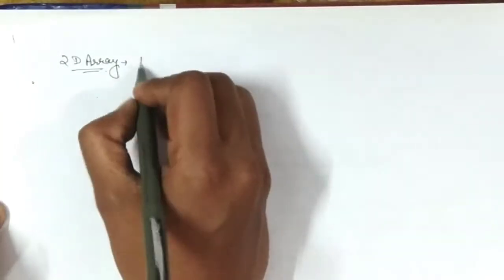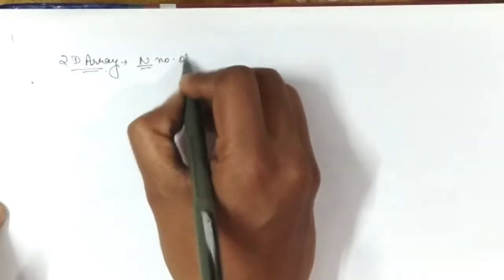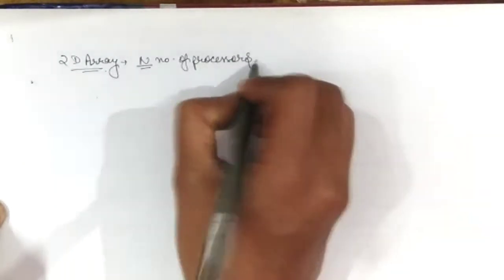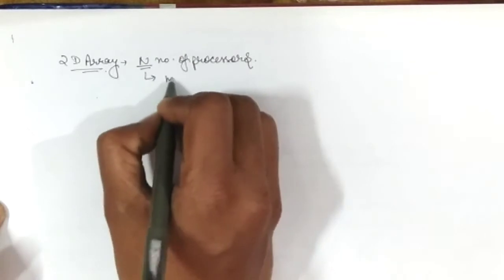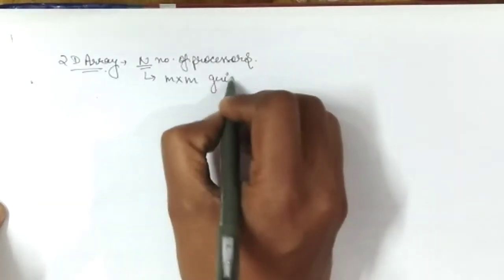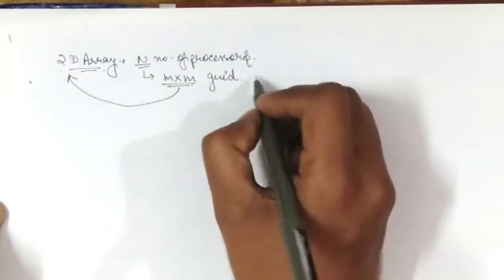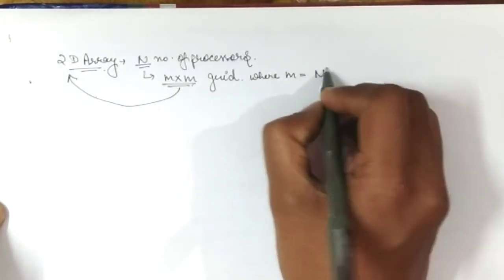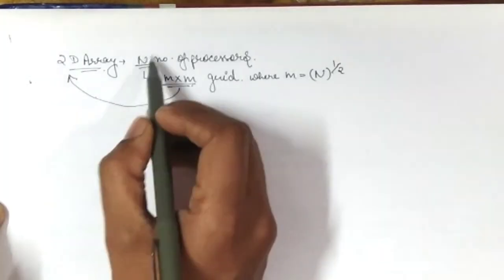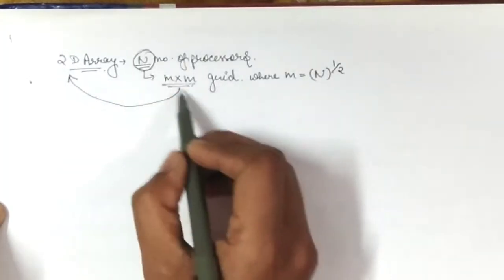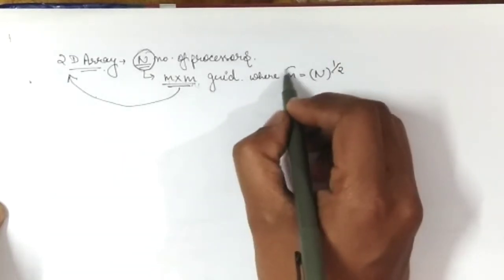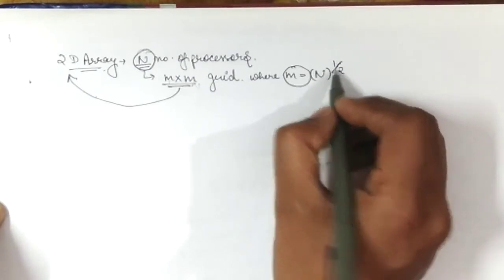In interconnection networks, one topology is the 2D array. In a 2D array, there are n number of processors which are divided into an m×m grid, where m equals n to the power of 1/2. This means the total number of processors are arranged in an m×m grid, and each row or column contains n to the power of 1/2 processors.